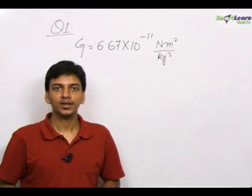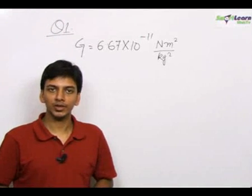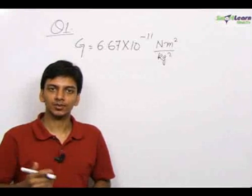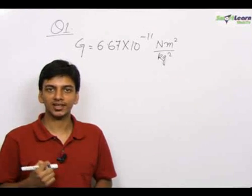Here is the first question we have in hand. The value of G has been given in SI units and we have to convert the value of G in CGS system. The CGS system stands for centimeters, grams and seconds.